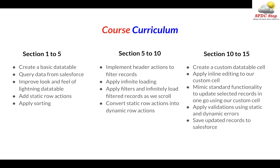Now let's talk about our course curriculum before we dive into it. This course is divided into 15 sections. In the first 5 sections of the course, we are going to perform tasks like creating a basic data table from scratch, querying data from Salesforce and formatting it properly to show it in our data table, improving the look and feel of our lightning data table, adding some row actions, and applying sorting to our lightning data table as well.